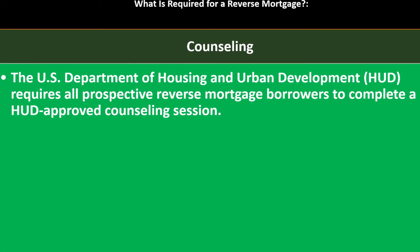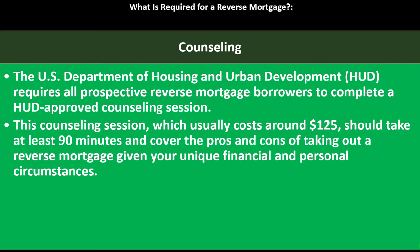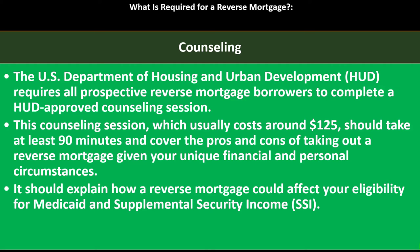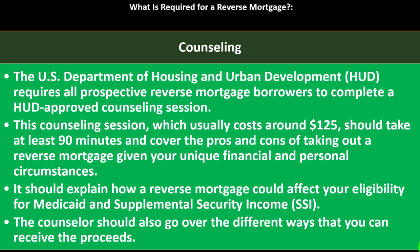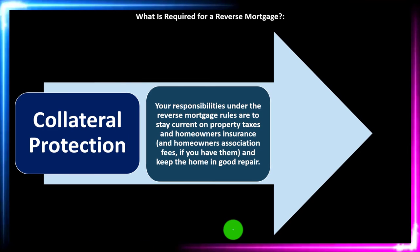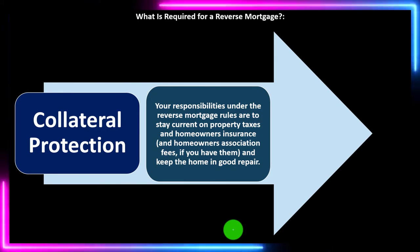Counseling: the U.S. Department of Housing and Urban Development (HUD) requires all prospective reverse mortgage borrowers to complete a HUD-approved counseling session. This counseling session, which usually costs around $125, should take at least 90 minutes and cover the pros and cons of taking out a reverse mortgage given your unique financial and personal circumstances. It should explain how a reverse mortgage could affect your eligibility for Medicaid and Supplemental Security Income (SSI), and go over the different ways you can receive the proceeds.